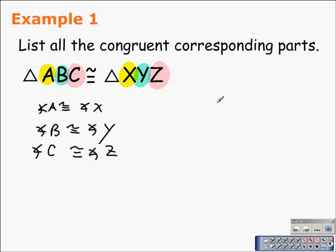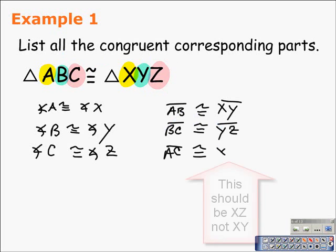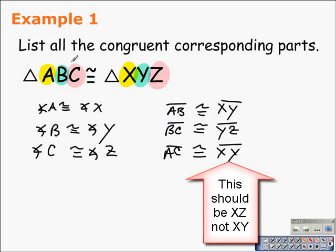Listing the corresponding sides is pretty simple. Segment AB corresponds to and is congruent to segment XY — notice the color coding: yellow to blue, so AB is congruent to XY. Next, BC is congruent to YZ. And finally, AC is congruent to XZ. We should be able to do that without a diagram because the order of the corresponding vertices is very important.